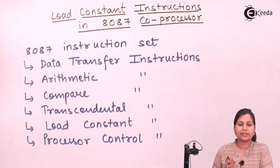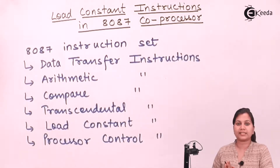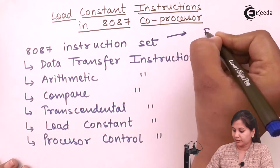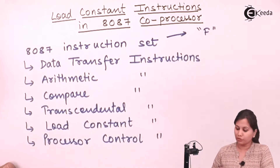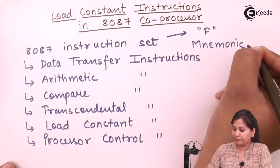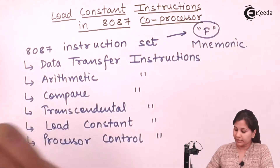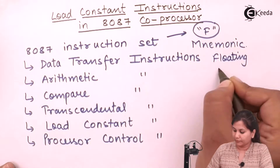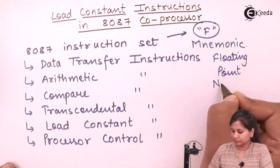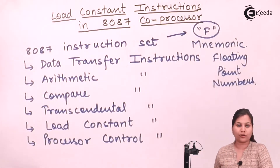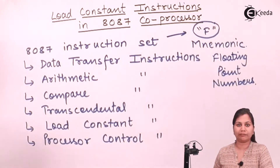All the instructions in the instruction set of the 8087 start with the alphabet F. The mnemonic of each instruction will have the prefix F. This F stands for floating point numbers. Whenever we study the instructions of the 8087, we will find that all the instructions start with the alphabet F.